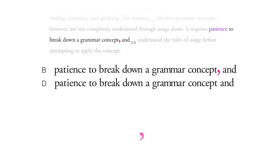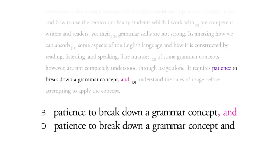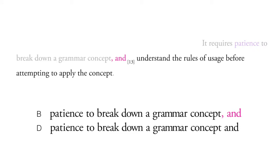Remember, a comma before and like this means that we've got an independent clause following that and. So let's go back to the passage and see, is this really an independent clause?